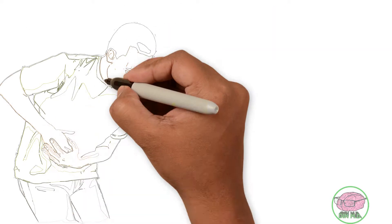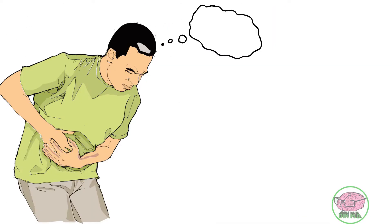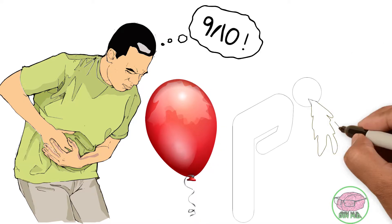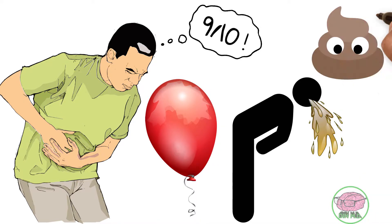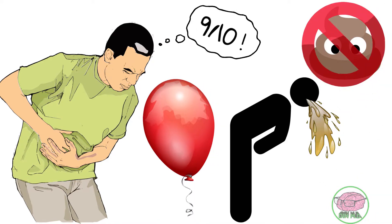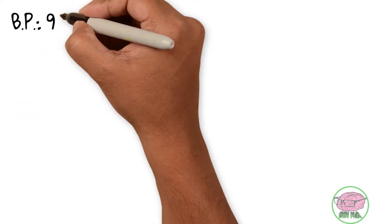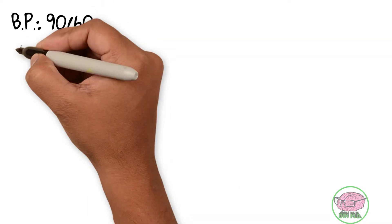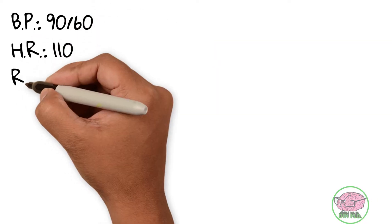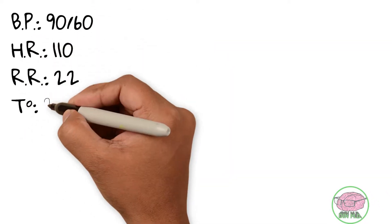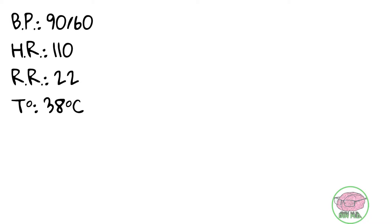He presents with intense abdominal pain 9 over 10, abdominal distension, vomiting, and constipation. His BP is 90 over 60, heart rate 110, respiratory rate 22, and temperature 38.